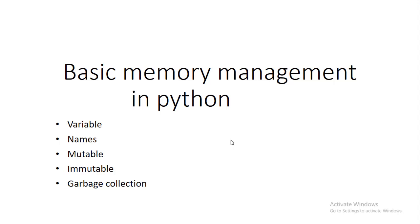Let us dive into memory management in Python. First, let's define some terms. A variable is just a container that stores different values. A name is just a label for an object, and in Python each object can have many names. Mutable means we can change something, while immutable means we cannot change it. We'll cover garbage collection as we proceed.